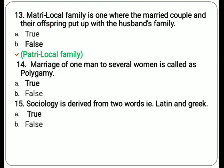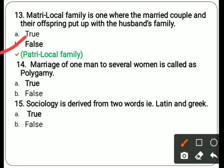Thirteenth: matrilocal family is one where the married couple and their offspring stay with the husband's family — answer is false. In matrilocal family, the couple stays with the wife's family. The correct answer here refers to patrilocal family, where the married couple and offspring live with the husband's family.